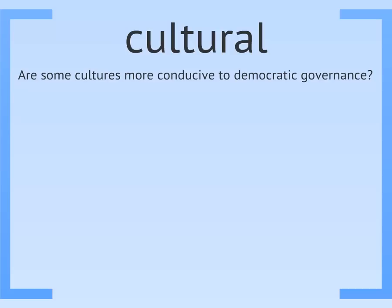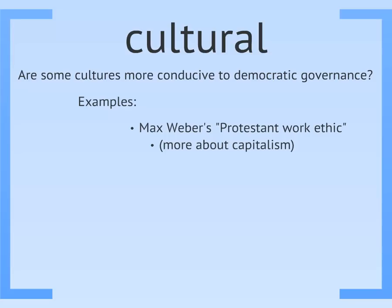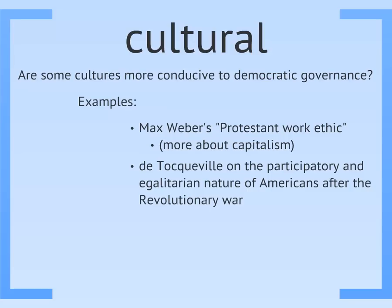The first approach looks to a society's culture to explain its government. The basic idea is that certain cultures are more encouraging of democracy than others. One of the most famous examples comes from Max Weber, who argued that there is something about Protestantism and its emphasis on the individual and individual responsibility that is good for capitalist societies, and to a lesser degree, good for democratic governance as well. Another famous example comes from de Tocqueville, a French social scientist who traveled to the States in the wake of the Revolutionary War to study American society.